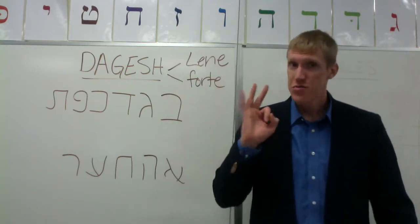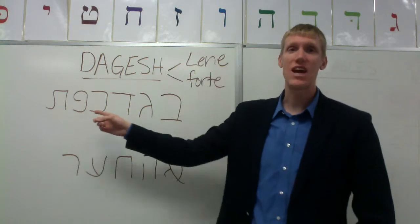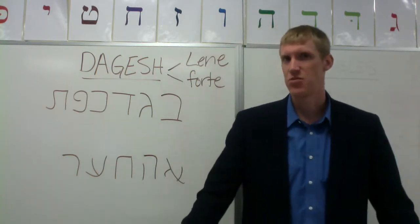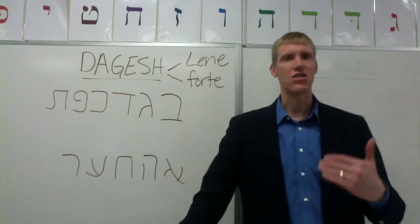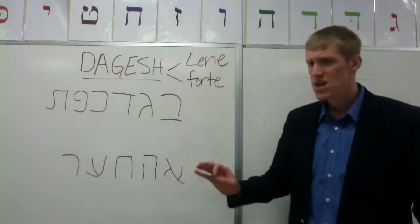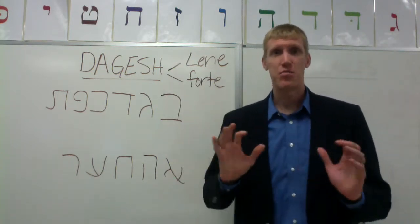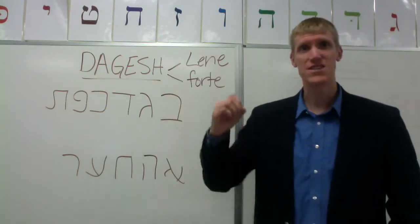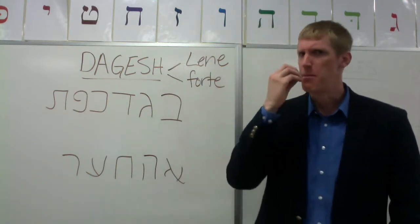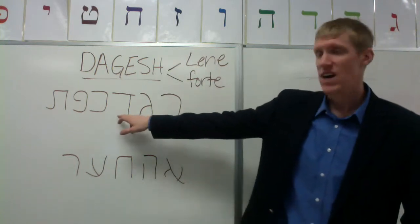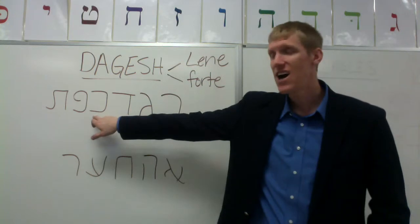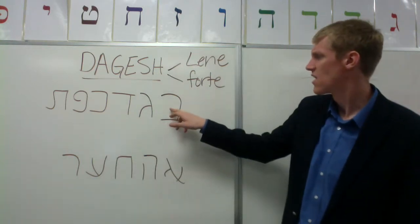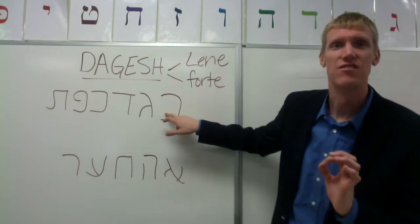For three of the six letters, the dagesh lene affects the pronunciation. For the other three, at one point in time it also affected their pronunciation, but it no longer does, particularly with modern Hebrew pronunciations. The three letters affected by the presence or absence of a dagesh lene are: first, the beit. If the beit has a dagesh, it's a B — a strong, labial sound. If the beit does not have a dagesh, it's weak — it's a V. So beit gives you B or V.